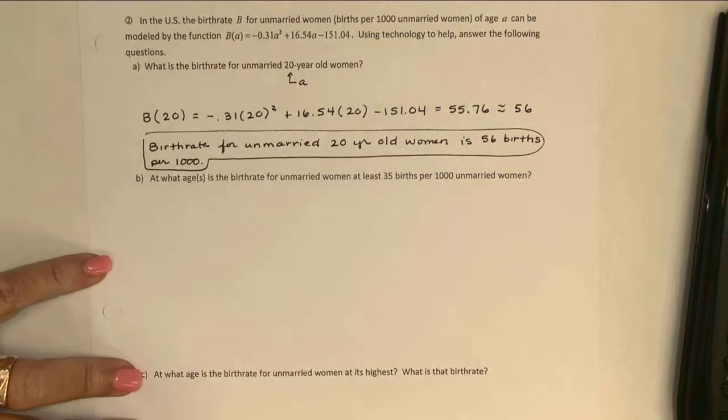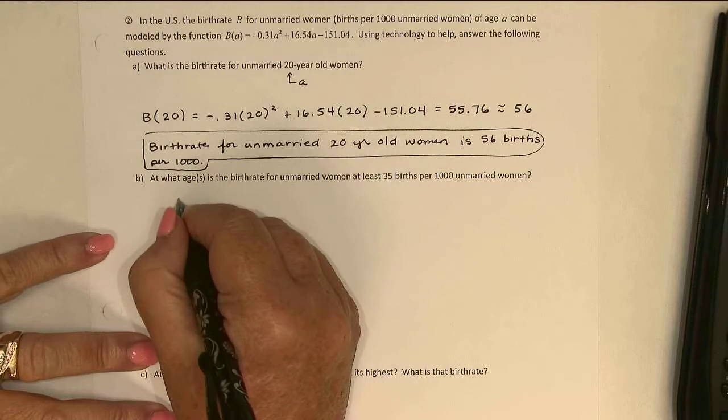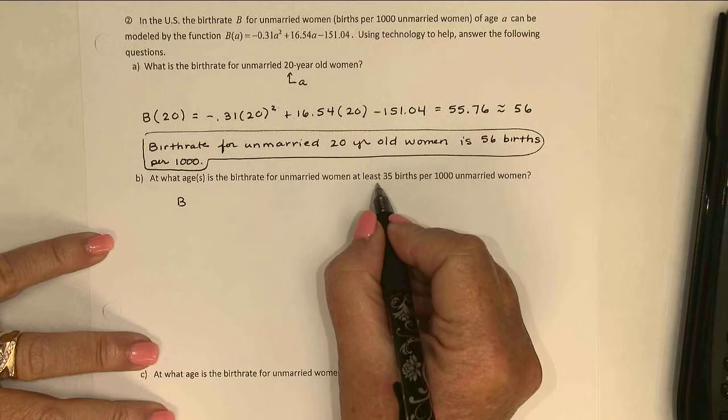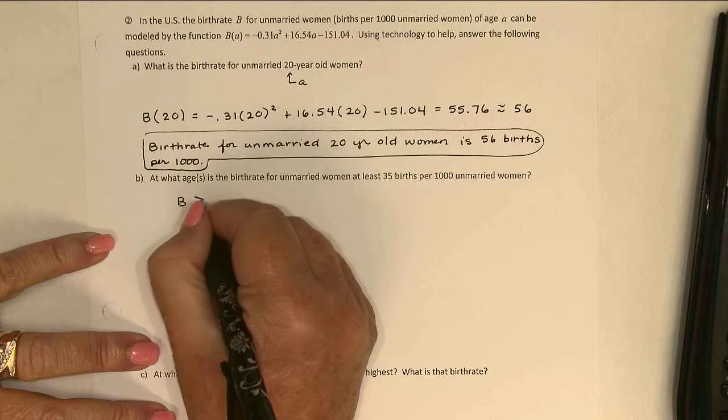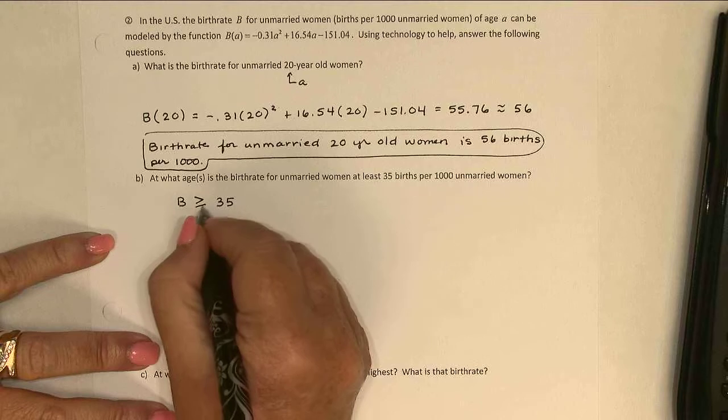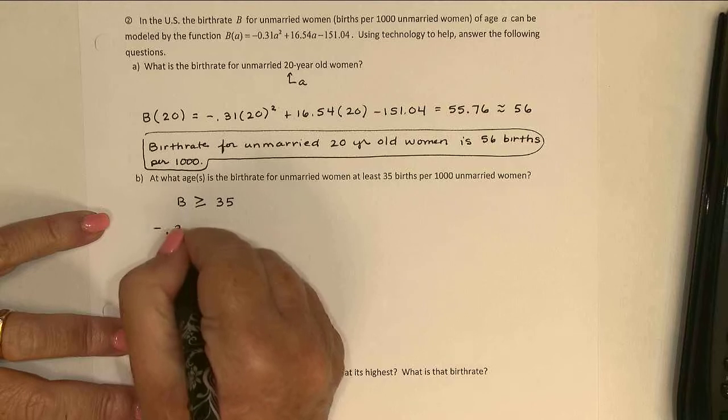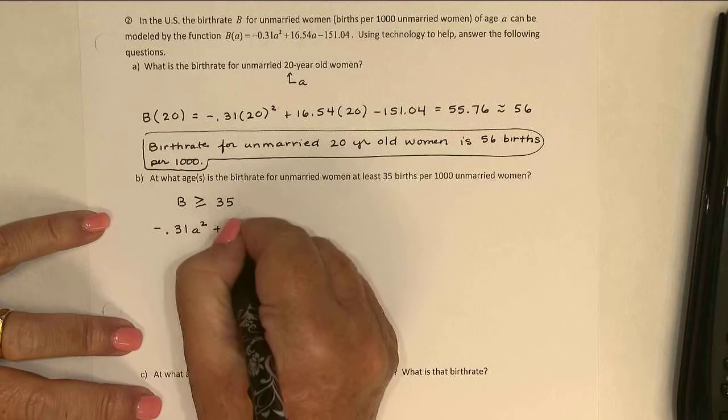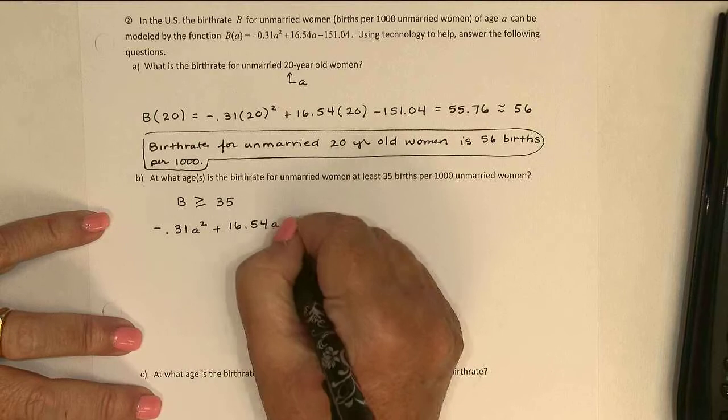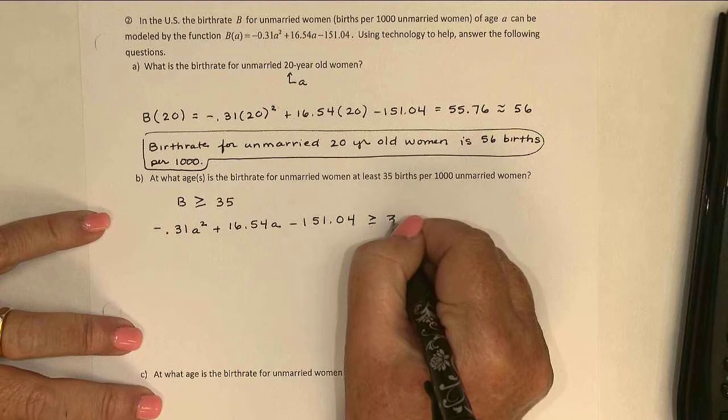All right, in part B, we ask at what age or ages is the birth rate for unmarried women at least 35 births per 1,000? So we want to know when the birth rate is at least, that means greater than or equal to, right? 35. So B is at least, meaning it's at smallest 35, it could be more. Or in other words, negative 0.31a squared plus 16.54a minus 151.04 is greater than or equal to 35.